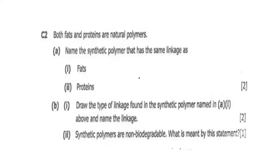C2: Both fats and proteins are natural polymers. Name the synthetic polymer that has the same linkage as fats and proteins. Organic chemistry is a very important aspect of your exam — please revise and know it. First, polymers are giant molecules made by joining smaller molecules known as monomers. Polymers fall into two broad categories: synthetic (man-made) polymers and natural polymers.